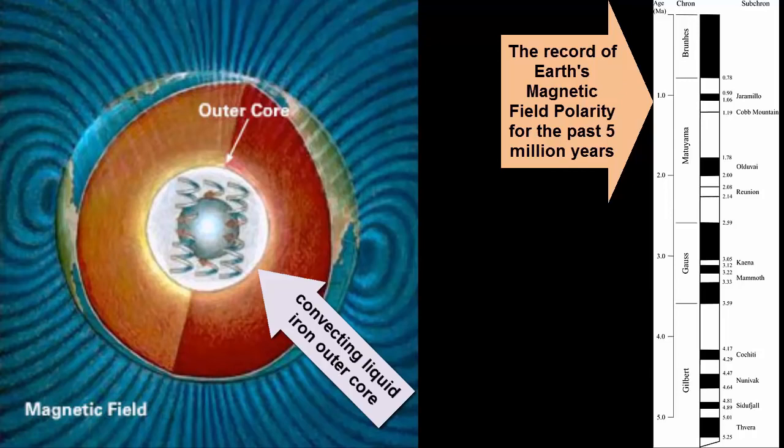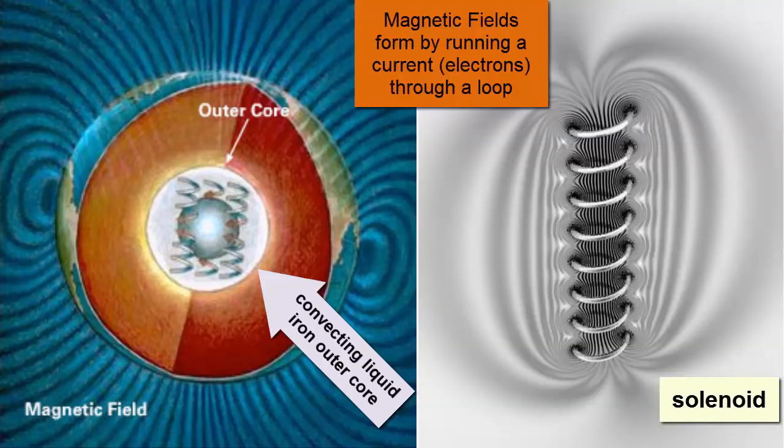Because it's a metal, that convection acts very much like a current of electrons moving in a loop, which, you'll learn in a basic physics class, is one way to produce a magnetic field. Anyone that's ever seen or worked with solenoids can visualize this type of magnetic field. Because of Earth's rotation, the convection currents tend to stack up on each other and combine to strengthen the field. The direction of the field is dictated by the right hand rule.